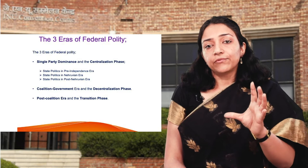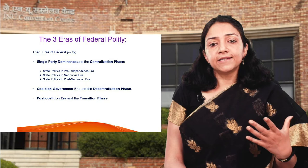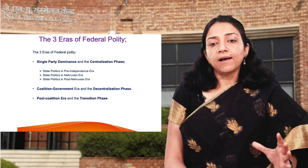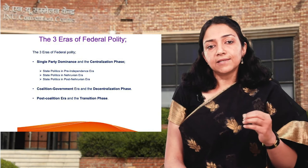We can divide the various phases of federal polity into three categories. The first is the single party dominance and the centralised phase. The second is the coalition government era and the decentralisation phase. The third is the post-coalition era and the transition phase.